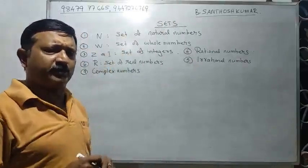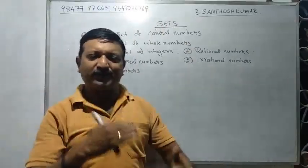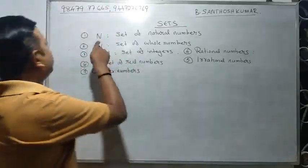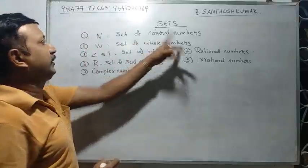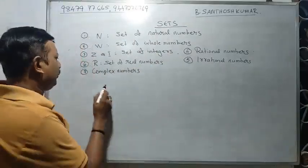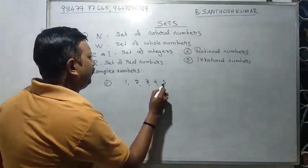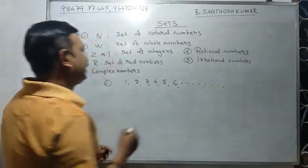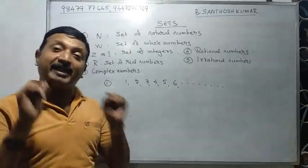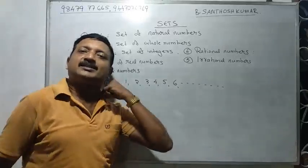We are going to study notations. So, what is the set of natural numbers? The set of natural numbers is 1, 2, 3, 4, 5, 6, 7 — these are natural numbers, also called counting numbers, denoted by N.